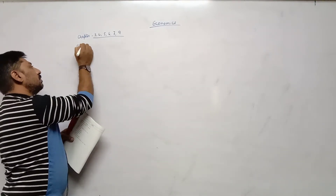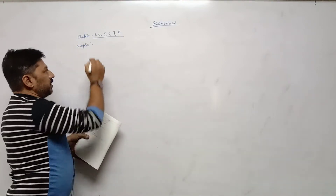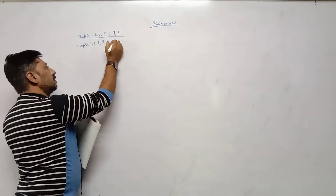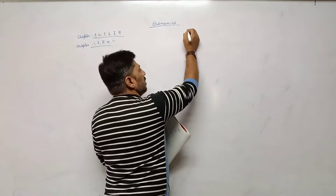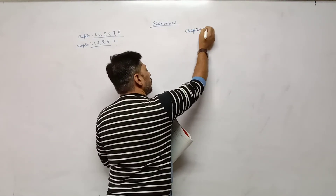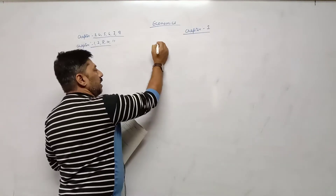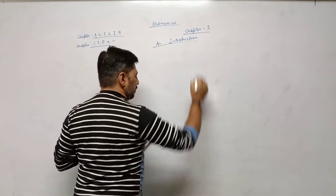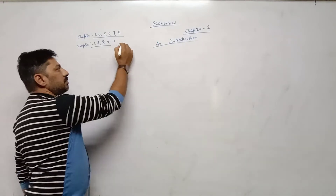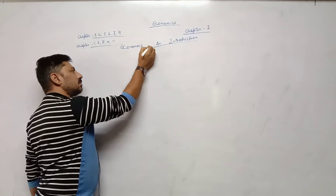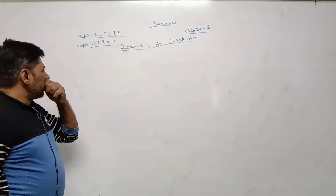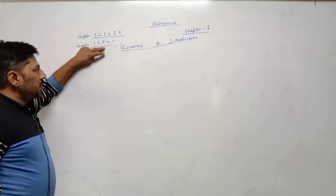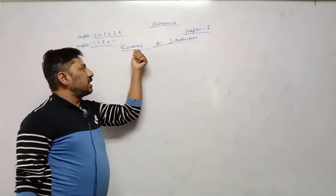The chapters which are left are chapter number first, second, eighth, then tenth and eleventh. Five chapters are left, and we are going to start today chapter number one — a very short chapter. Chapter number one: Economics and Introduction.